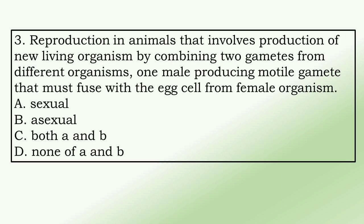3. Reproduction in animals that involves production of a new living organism by combining two gametes from different organisms, one male producing motile gametes that must fuse with the egg cell from a female organism. a. sexual, b. asexual, c. both a and b, d. none of a and b.